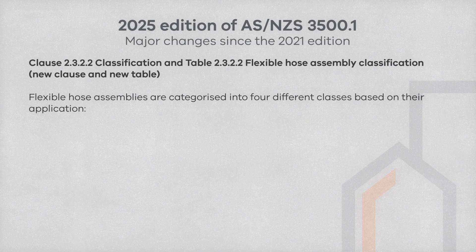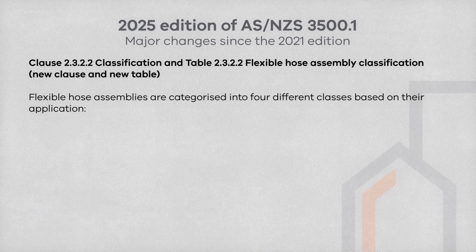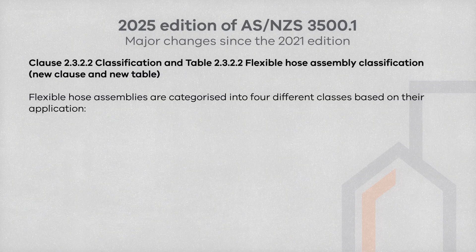There are new classification requirements when considering the installation of flexible hose assemblies, now located in Clause 2.3.2.2, along with an associated table. These requirements relate to the hose class — not the building class. Dependent on the class of the flexible hose, certain requirements may apply and be specific to such situations.